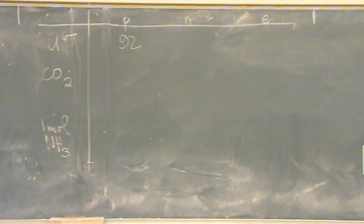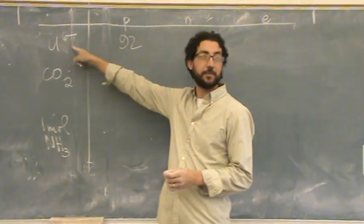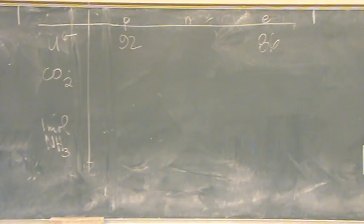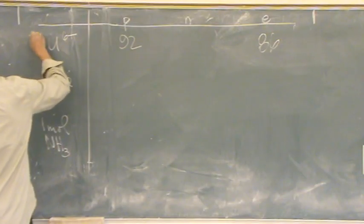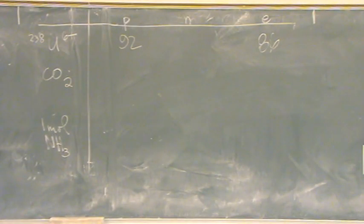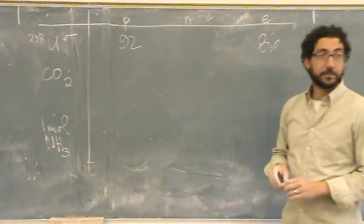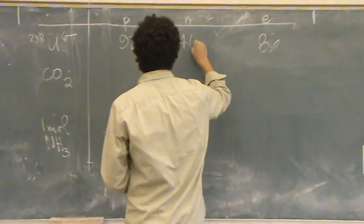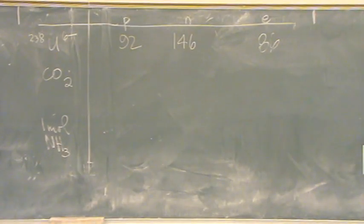How many electrons would we have? 86 — 6 less than 92 because it's plus 6, which means we're missing 6 electrons. So 86 electrons. For neutrons, it depends on which isotope of uranium we have. Let's say this is uranium-238, which is a pretty common isotope. The mass number is the sum of protons and neutrons, so 238 minus 92 is 146 neutrons.